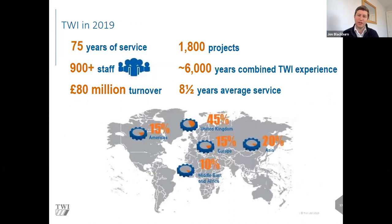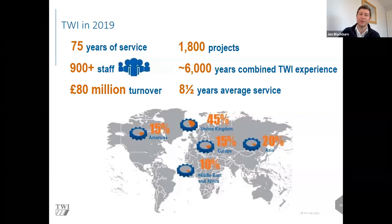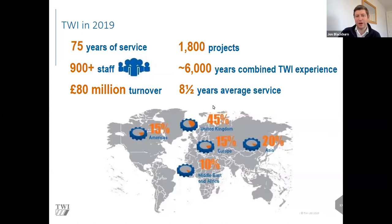On an average year, TWI does about 1,800 projects. The vast majority are single-client confidential projects, but we also undertake core research available to all members, funded from membership fees, and we participate in leveraged projects funded by the UK or European government. We have about 900 staff worldwide and about 6,000 years of combined TWI experience. The majority of our activity is from UK customers, but we have growing activity in the Americas, Middle East, Africa, Asia, and Europe.